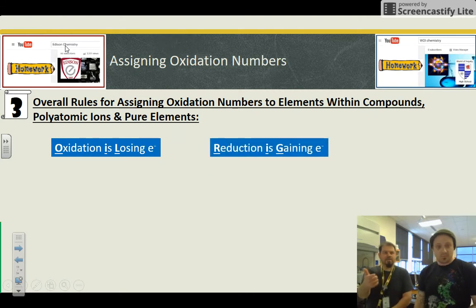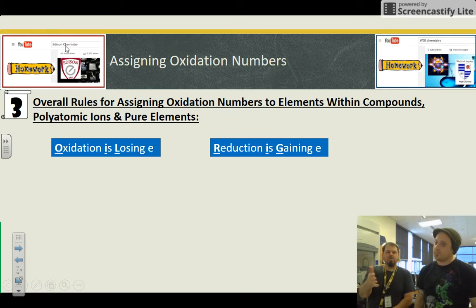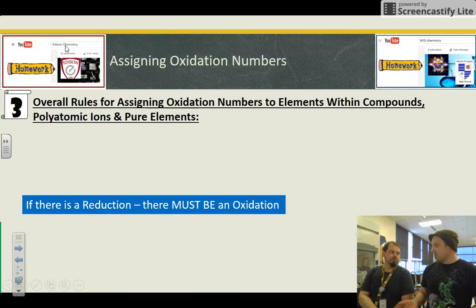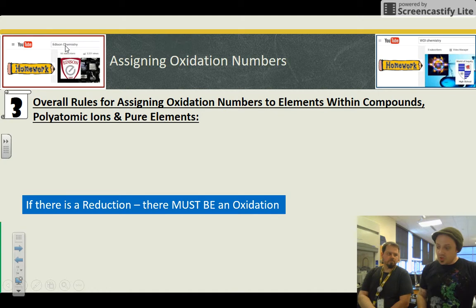OIL RIG: oxidation is losing electrons, reduction is gaining electrons. Notice they threw that electron in there. That's the basic mnemonic for remembering what oxidation and reduction are. Now remember, we've been saying this over and over: if there's a reduction, there also must be an oxidation. Simple enough, one atom loses an electron, the other one's going to pick it up.